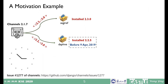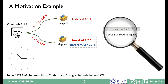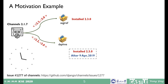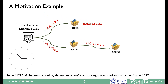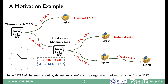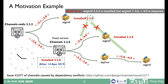However, real-world bugs are far more complicated in the open-source community. Taking the issue reports in the project Channels as an example: Channels version 2.1.7 directly depends on two libraries, asgiref and Daphne. Before April 9, 2019, there were no dependency conflict issues. However, with the evolution of the libraries, Daphne released a newer version 2.3.0 which could be installed in Channels. The newer version of Daphne introduced the library asgiref again with a conflicting version constraint, causing a build error in Channels. To address this issue, Channels developers revised the version constraint of asgiref to a fixed version. But after April 14, 2019, the fixed version of Channels also affected its downstream project Channels Redis, causing another dependency conflict issue.